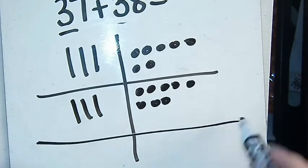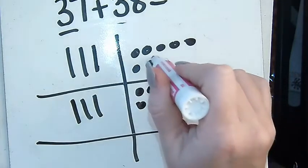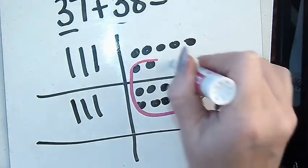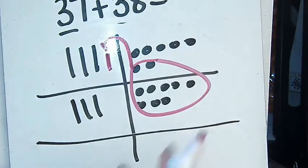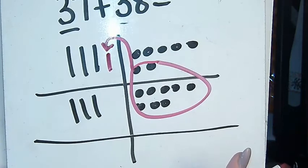Now I'm going to use my second color because it helps me see if I've bundled or not. So I have eight, nine, ten. Remember, if we have ten, we turn it into a ten stick. So I teach them to bundle it and then draw a new ten.